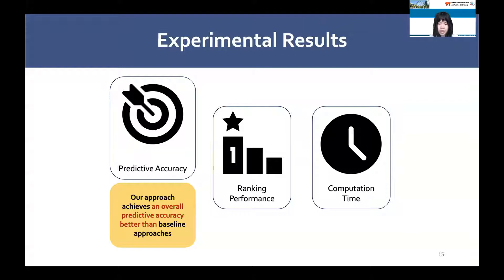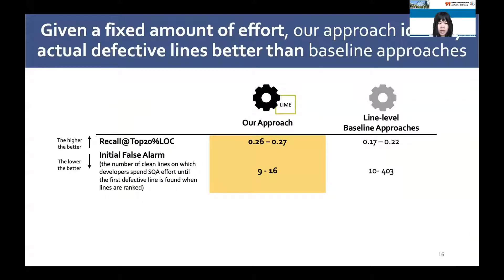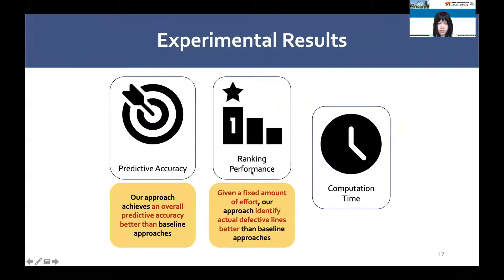Next, we also compare the ranking performance of our approach against the line-level baseline approaches. Given a fixed amount of effort — in other words, the top 20% of lines ranked by our approach and the baseline approaches — our approach identifies actual defective lines better than the baseline approaches. Furthermore, fewer clean lines need to be examined to find the first defective line when ranking by our approach. We conclude that given a fixed amount of effort, our approach identifies actual defective lines better than the baseline approaches.